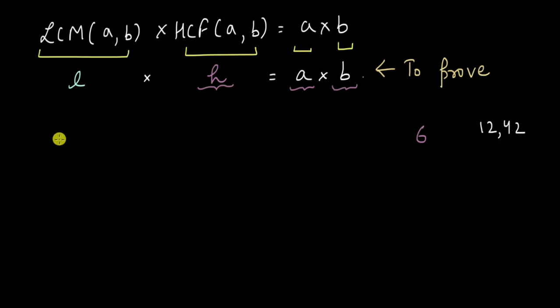So here as well we can say that A divided by H will give me some number. Let's call that number P. And similarly B divided by H will also give me some number. Let's call that number Q.